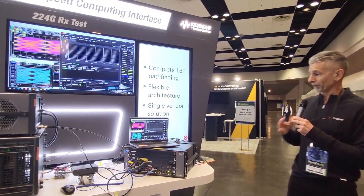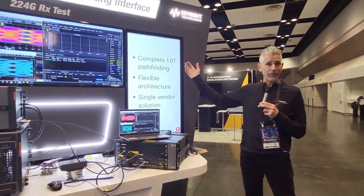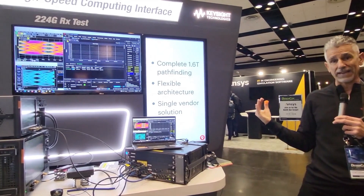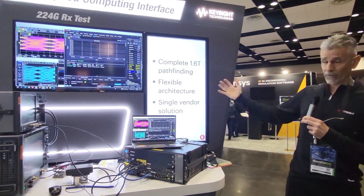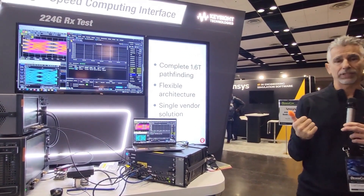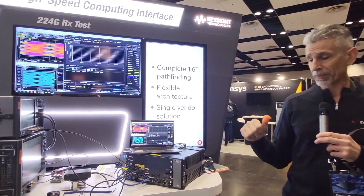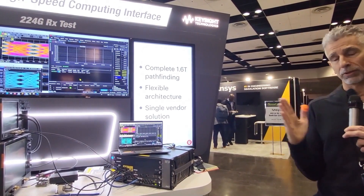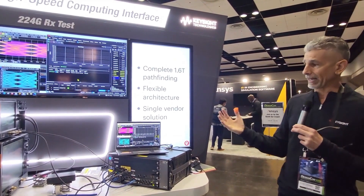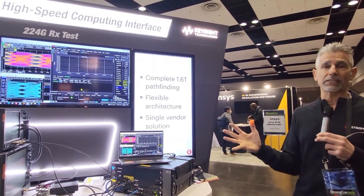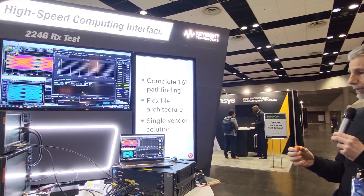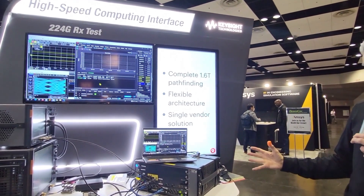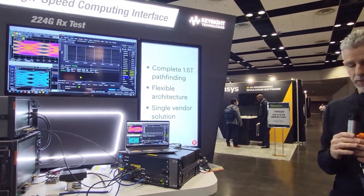The M8050 allows pathfinding in the 1.6 tera or 224 gigabit per lane arena. It's very flexible — it has not only extremely high signal integrity, but it allows seven-tap de-emphasis with programmable cursor position. It has really fast rise times: five picoseconds. We'll be able to show you that here in a minute. It's just a breakthrough product for Keysight with our BERTs.